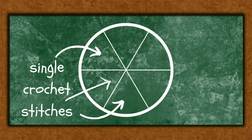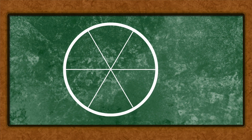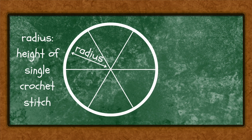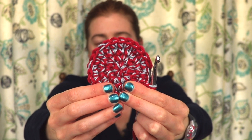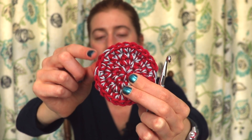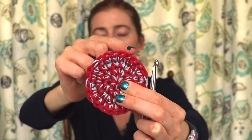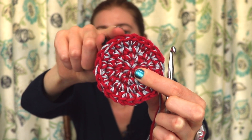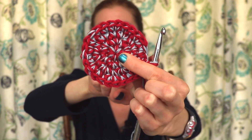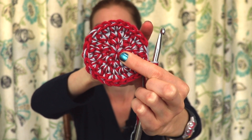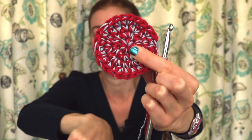If we think about single crochet stitches worked in the round with just one round, the radius is going to be the height of the stitch, and the circumference will be the width of however many stitches we put in our circle. Looking at this circle where I've worked four rounds, the circumference equals adding up the width of the tops of all the stitches — round four has 24 stitches, so 24 times the width of each stitch gives me the circumference.